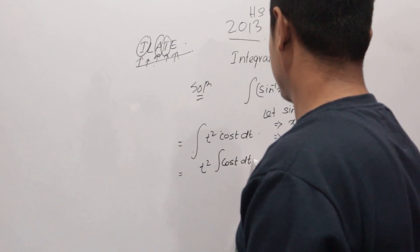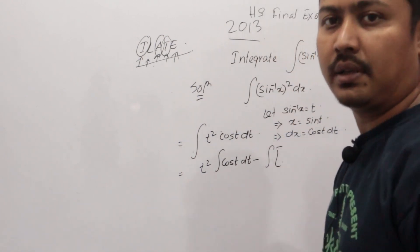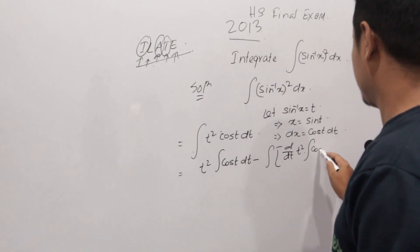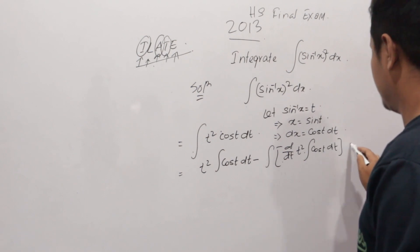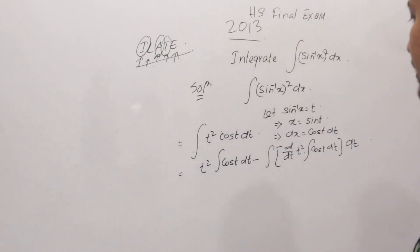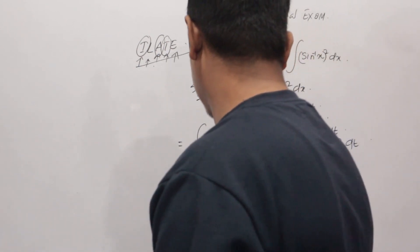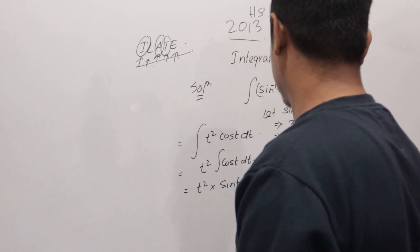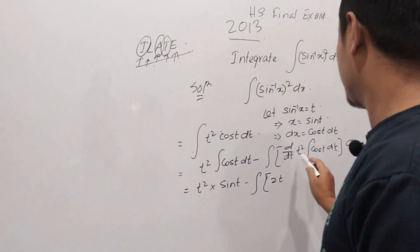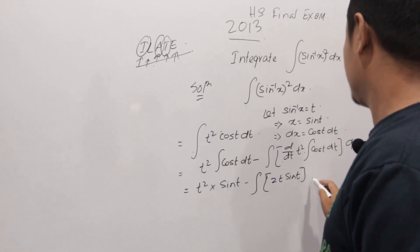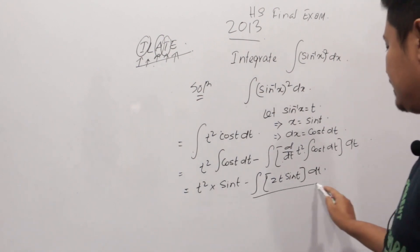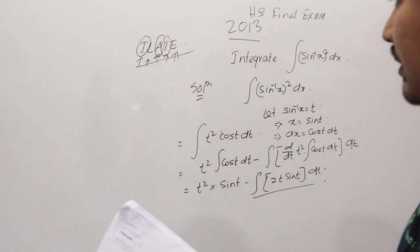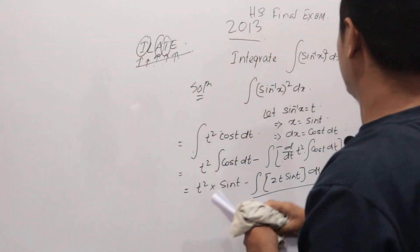So applying integration by parts: integral of t² cos(t) dt equals t² times integral of cos(t) dt, minus integration of [d/dt of t² times integral of cos(t) dt] dt. The integral of cos(t) dt is sin(t), so we get t² sin(t) minus integration of 2t sin(t) dt.